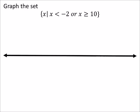Anyways, the examples hopefully clarify this. So we're going to graph this set: if we have the variable x such that x is less than negative 2 or x is greater than or equal to 10.